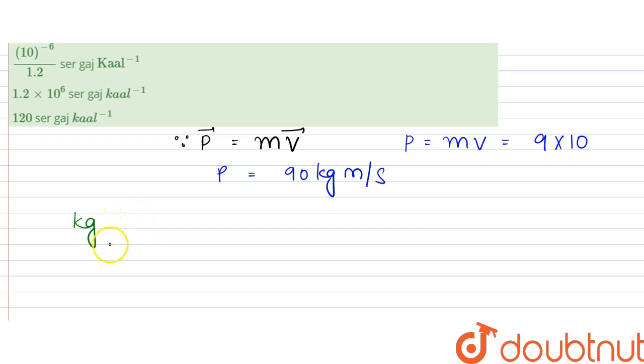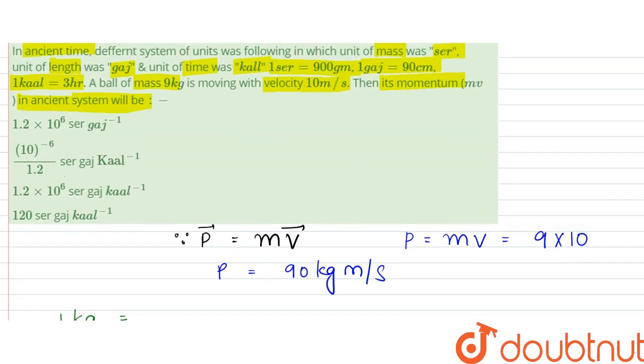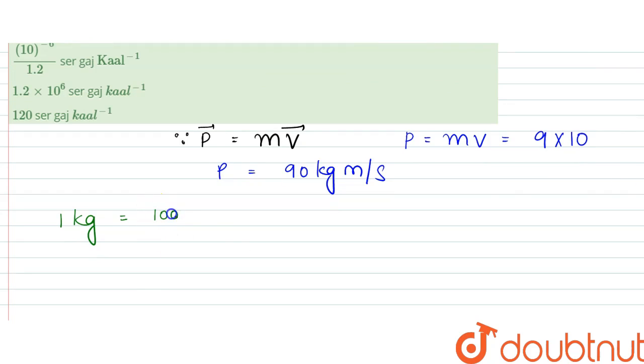Now, 1 kg is equal to 1000 grams, and 1 ser is equal to 900 grams. Therefore, we can write that 1 kg is equal to 10 by 9 ser.